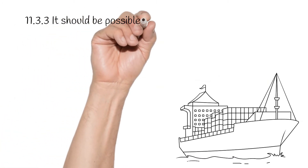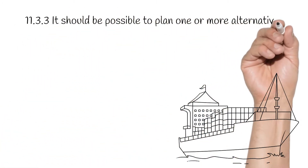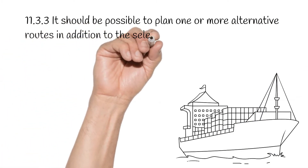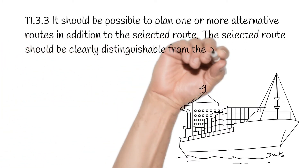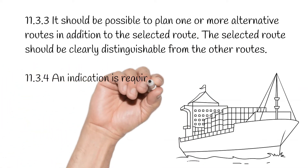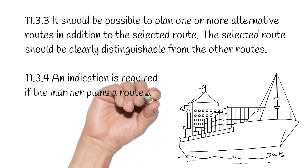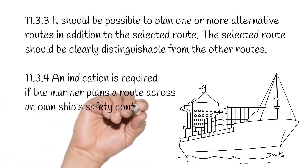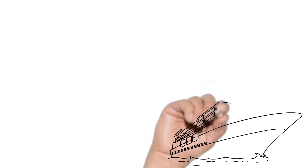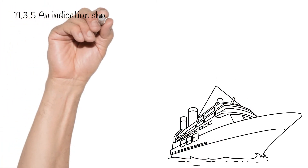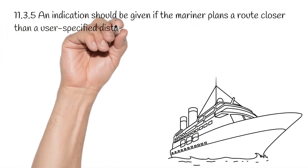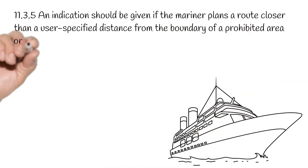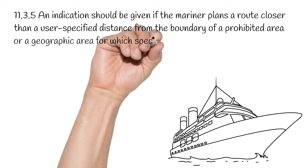11.3.3. It should be possible to plan one or more alternative routes in addition to the selected route. The selected route should be clearly distinguishable from the other routes. 11.3.4. An indication is required if the mariner plans a route across an own ship's safety contour. 11.3.5. An indication should be given if the mariner plans a route closer than a user-specified distance from the boundary of a prohibited area or a geographic area for which special conditions exist.